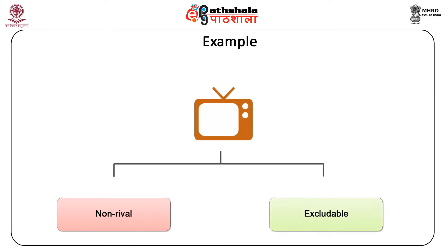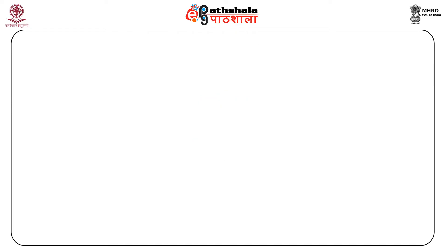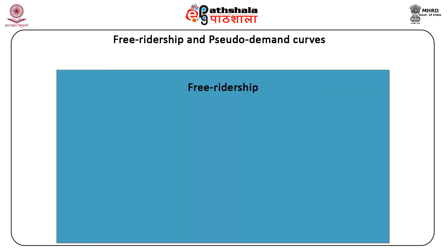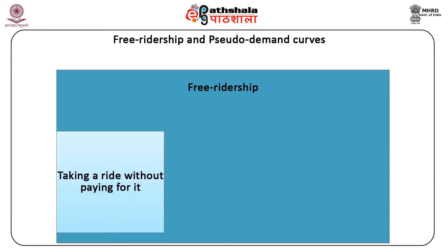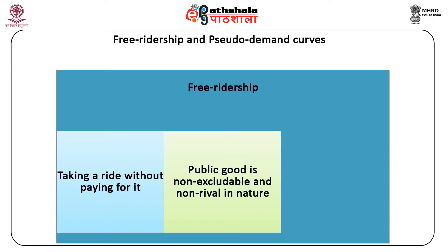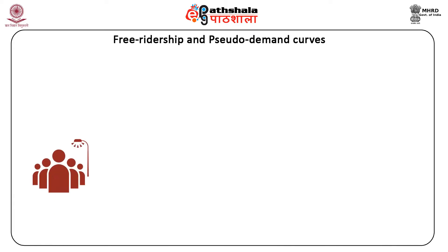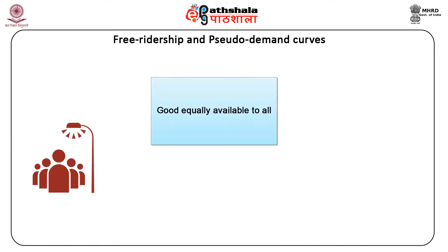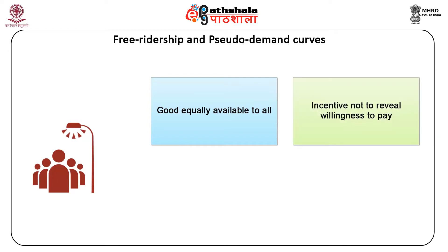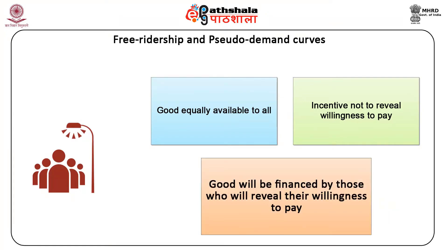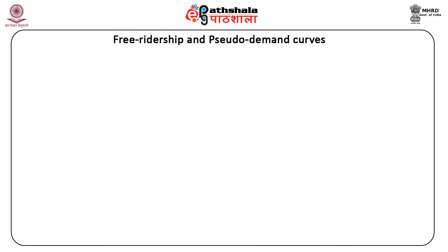Another interesting phenomenon connected to the concept of public good is free ridership — taking a ride without paying for it. Since a public good is non-excludable and non-rival, people will avoid paying for it voluntarily. People know that once the good is available, it will be equally available to all even if they have not paid. Each consumer has an incentive not to reveal their willingness to pay, expecting the good to be financed by others. Free ridership makes allocation extremely difficult because there is no revealed demand curve.